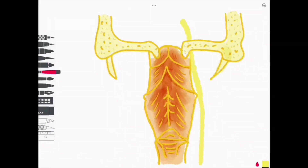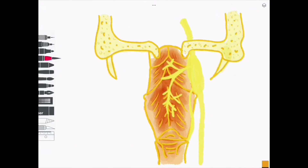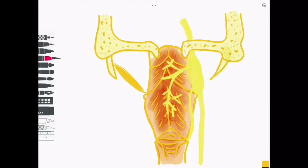Let's go through the innervation of the pharyngeal muscles. The vagus nerve provides innervation to the constrictors through branches which form the pharyngeal plexus. The plexus also innervates most of the palate, but not the larynx, which has its own distinct innervation from the superior and recurrent laryngeal nerves, also branches of the vagus.